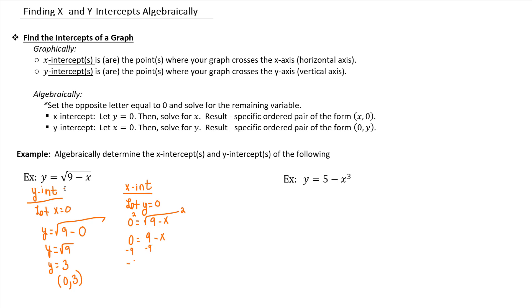Subtract 9 from both sides of the equation and you're left with negative 9 equals negative x. Divide by negative 1 on both sides and you get x is a positive 9. So when y is 0, x is a positive 9. So that gives us an ordered pair of 9 comma 0. So that is the x-intercept.